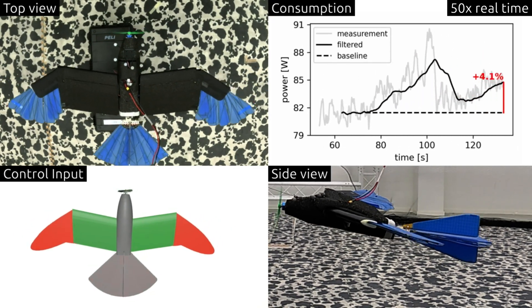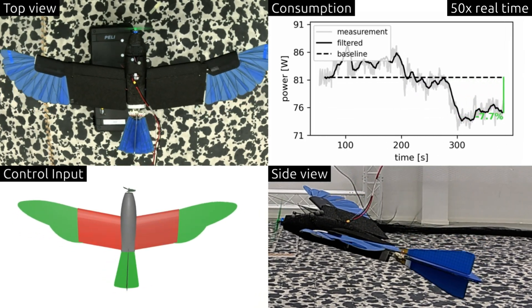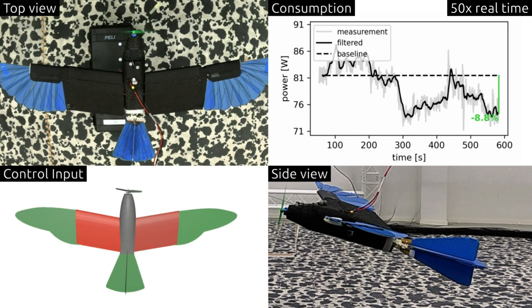Our approach yields significant improvements at 8, 10 and 12 meters per second of up to 11.5% compared to a non-morphing configuration.